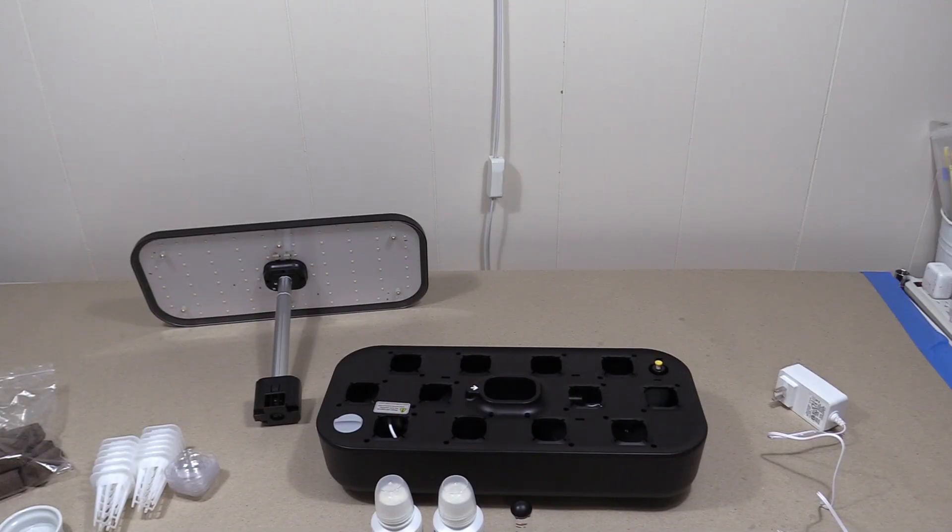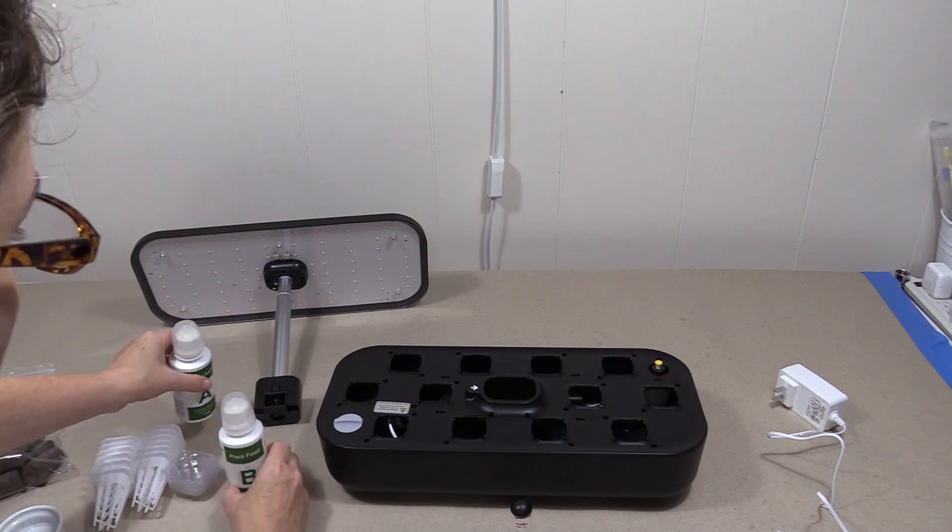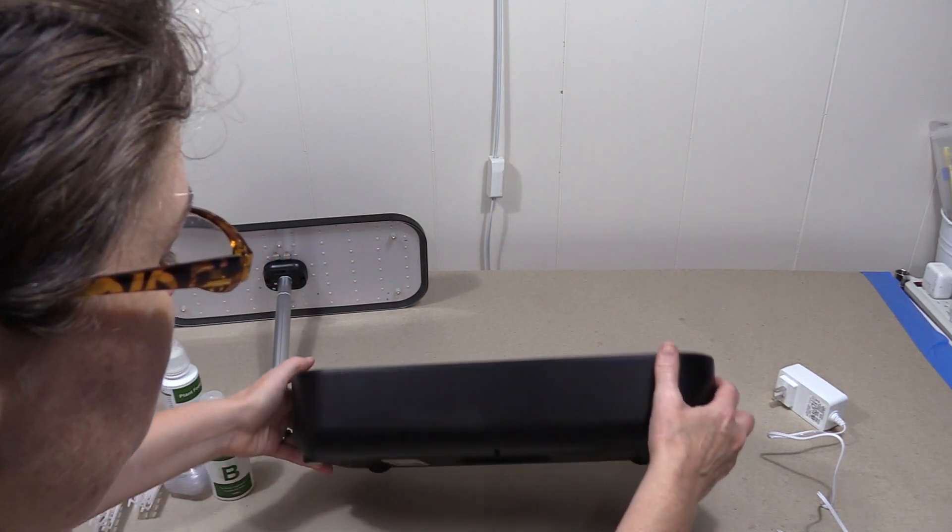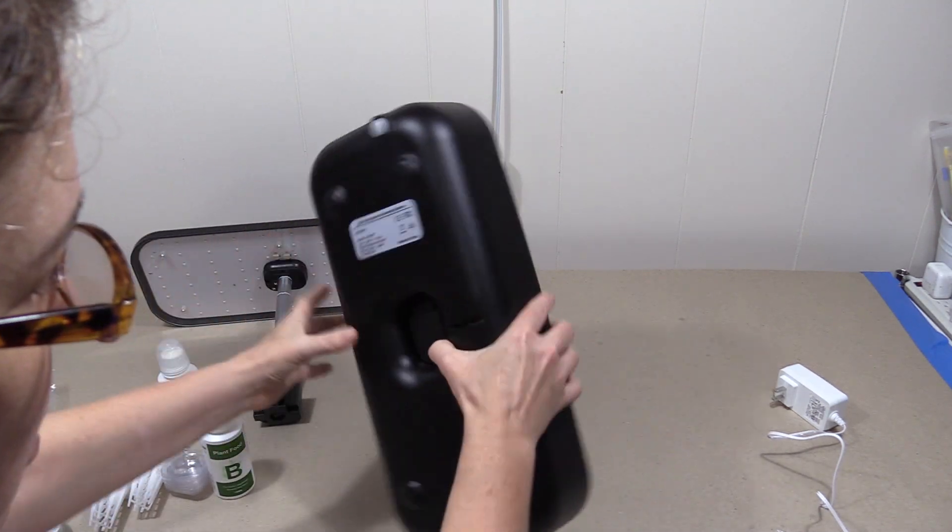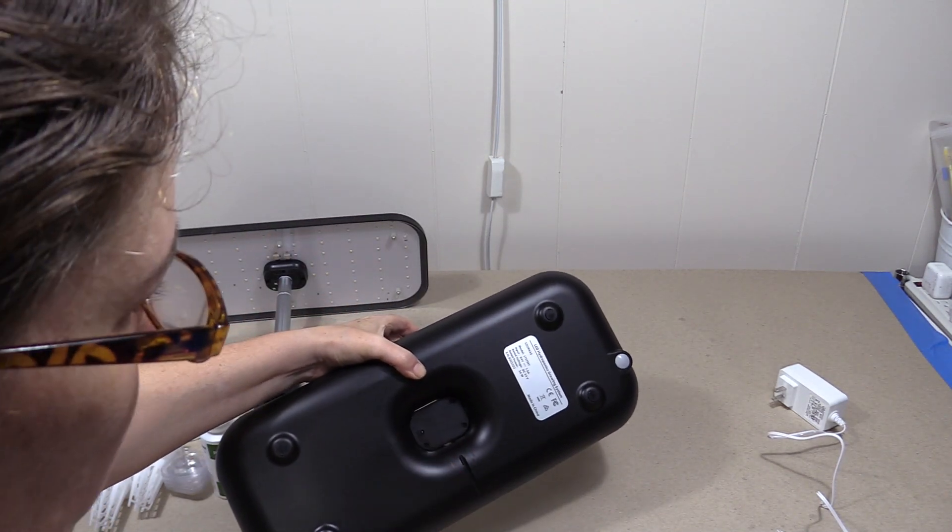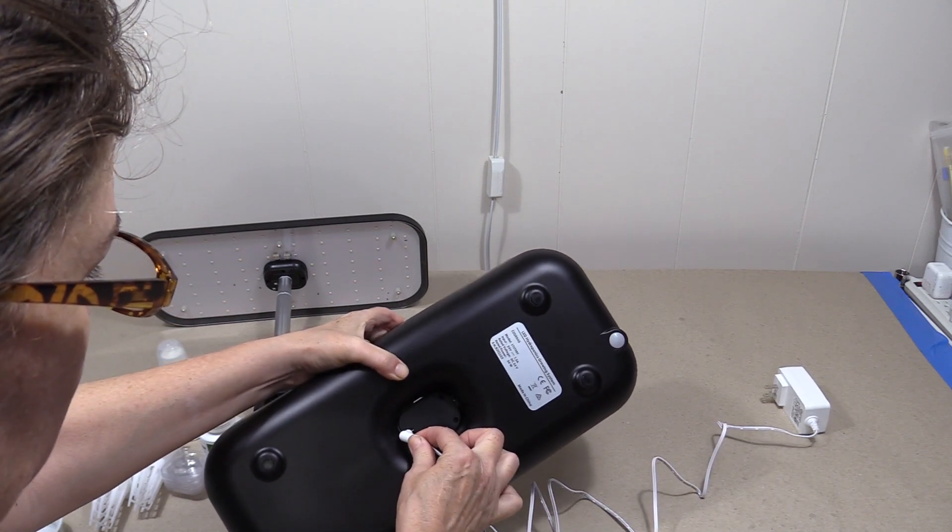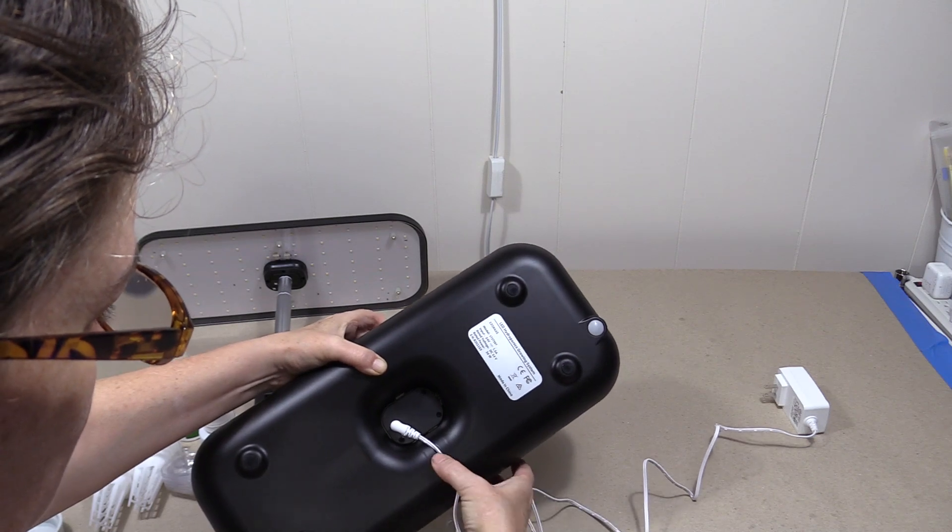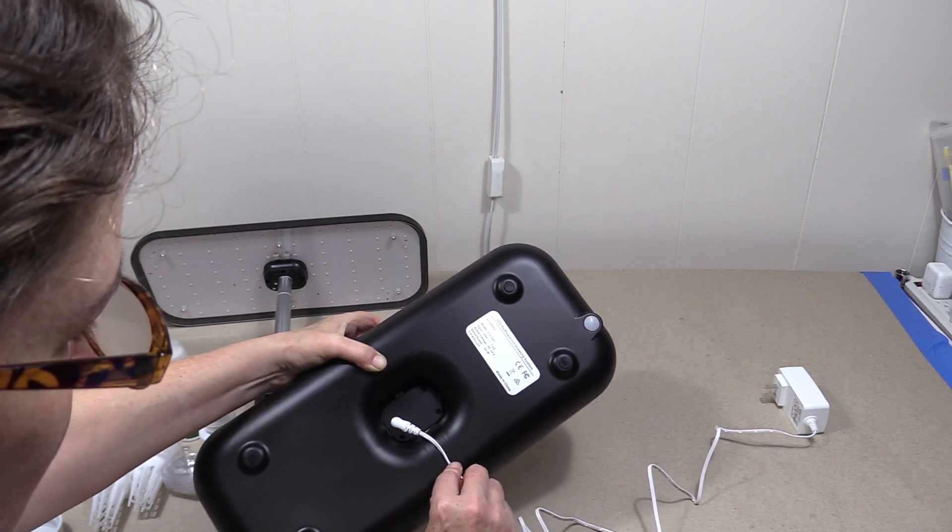Now it's time to go ahead and get the unit ready to add our water and plants. So the first thing we want to do because the outlet is on the bottom is we're going to flip it over and it plugs in right here. We're not going to plug it into the wall yet and you're going to run your cord through this little notch.